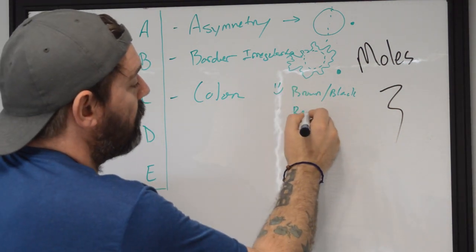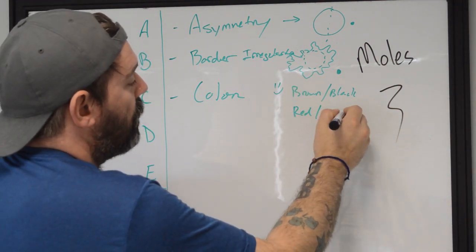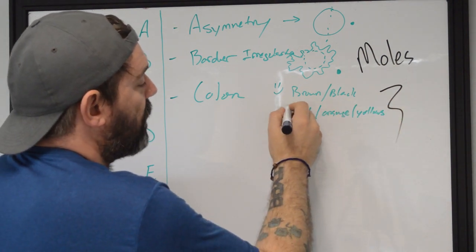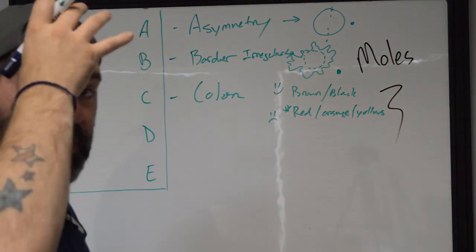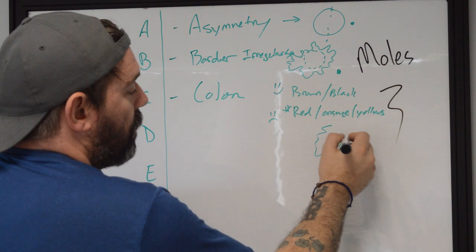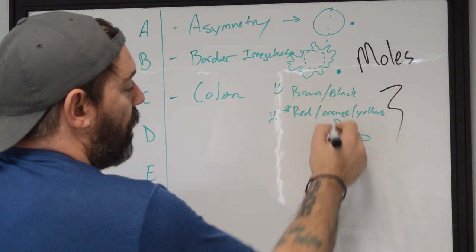If you start seeing red, orange, or yellows inside of them and specifically reds, that's when we need to start worrying about it. If you have an irregular shaped pattern or growth on the skin,